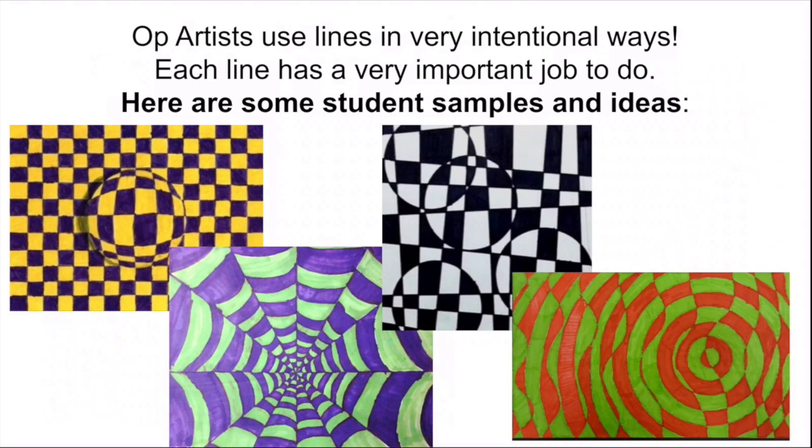Here are some student examples. You can see that purple and yellow one is a lot like the Victor Viserly image that we saw. That black and white one with the circles looking like a checkerboard behind it, Bridget Riley would really be loving that one because that was very similar to the kind of work she did. And Jesus Rafael loved using lines up and down and crisscrossing back and forth, just like the other ones.